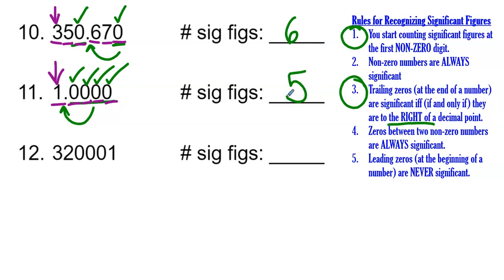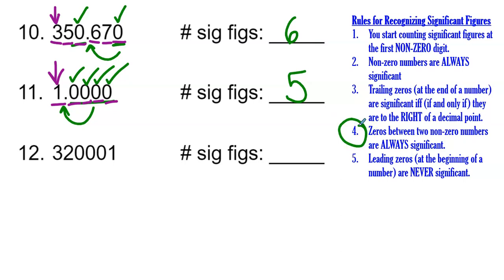Last but not least, number twelve. Looking at this number, there are zeros that are sandwiched between non-zero numbers, so rule four applies — zeros between two non-zero numbers are always significant. Starting at the first non-zero digit, the three, we count: one, two, three, four, five, six significant figures.